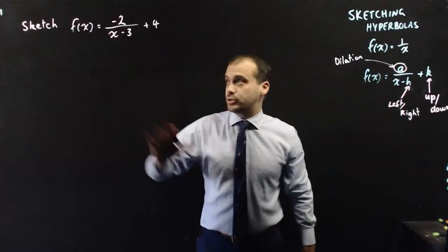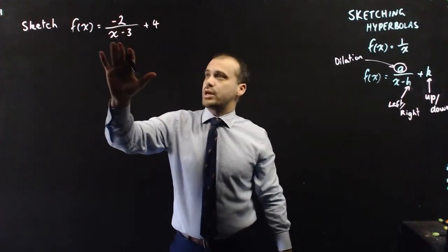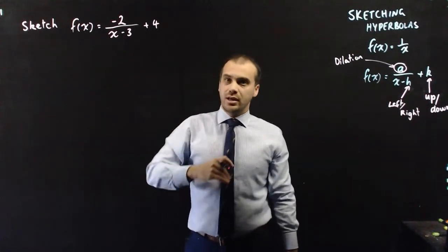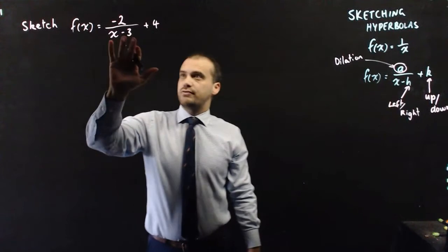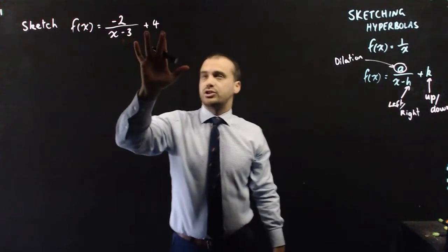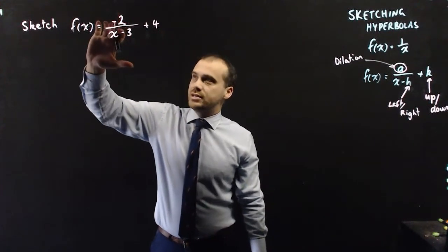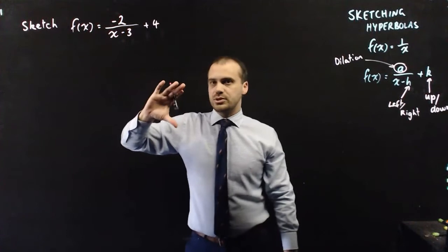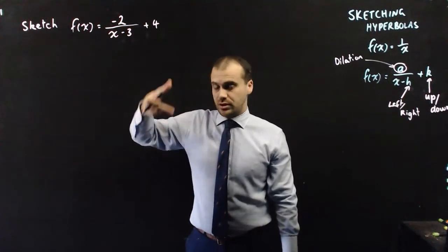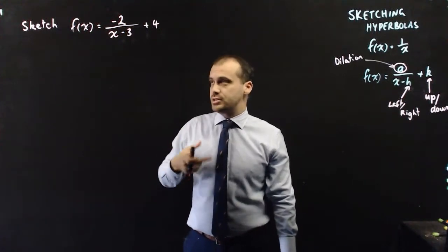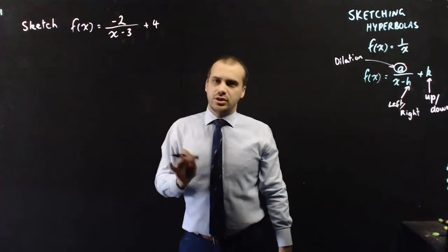Let's take a look. We've got the function f(x) = -2/(x - 3) + 4. There's all sorts of things going on here: it's shifting left and right, shifting up and down, it's dilating, and there's a negative so it's also reflecting around the x-axis. Let's do each of those in turn.